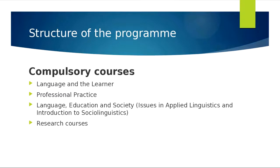The third course is Language Education and Society, which covers the third pillar — how we use languages according to context, age, and social factors, touching on applied linguistics and sociolinguistics. The fourth course is a Research Methods course giving you the foundation to design a research project, formulate research questions, and choose research methodologies. The aim of all four courses is to help you complete your dissertation at the end of the master's.